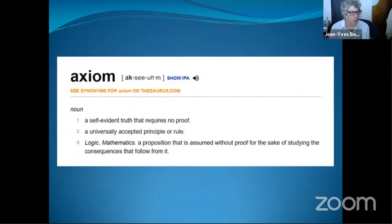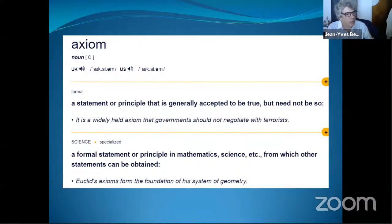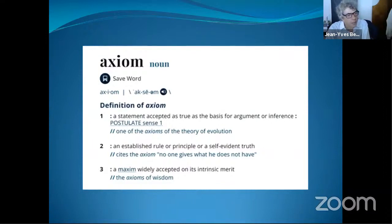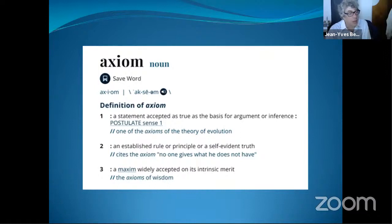The second definition, from the Cambridge Dictionary, is quite similar: something which is generally accepted to be true, but need not be so; a formal statement in mathematics from which other statements can be obtained. Now the third definition adds something new: a maxim widely accepted on its intrinsic merit — 'the axioms of wisdom.' This is something less formal than the axiom in the mathematical sense. We can find these variations of meaning if we look at some quotations by famous people.